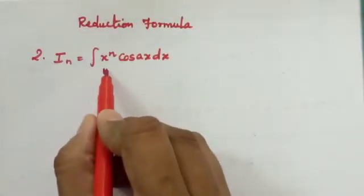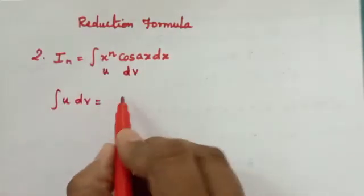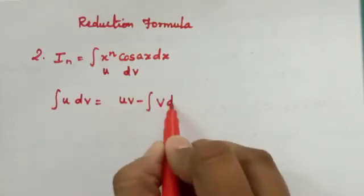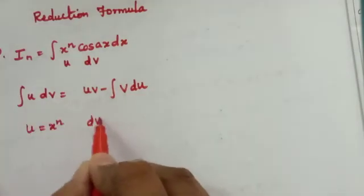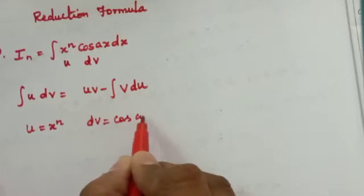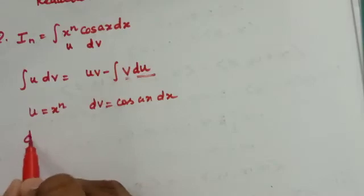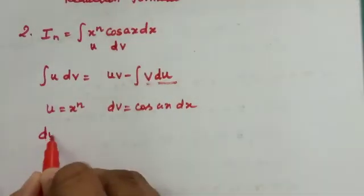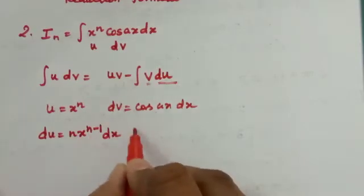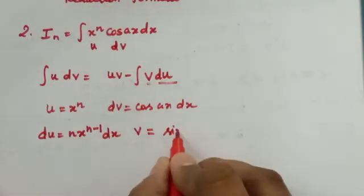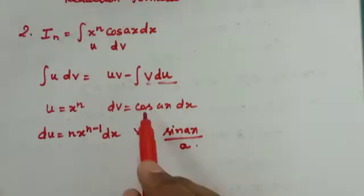So we have here the U dv form: integral of U dv is equal to U times v minus integration of v du. So what is U here? U is x power n and dv is cos ax dx. So we need du and v. From here, du is equal to n into x power n minus 1 dx, and v is equal to sin ax by a.